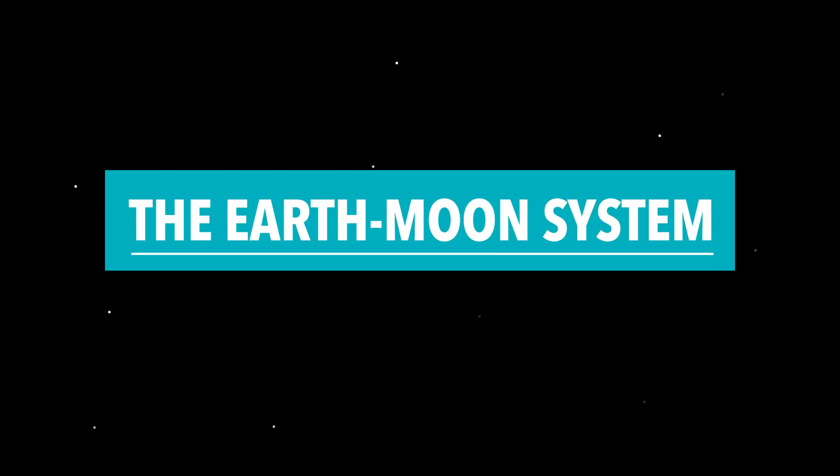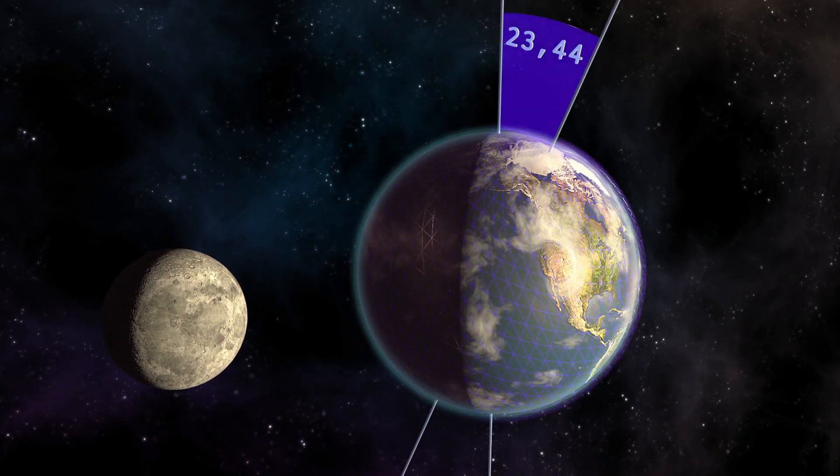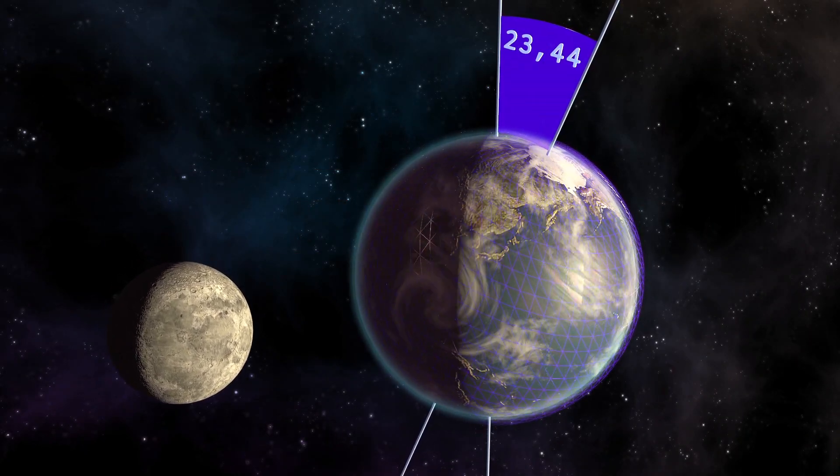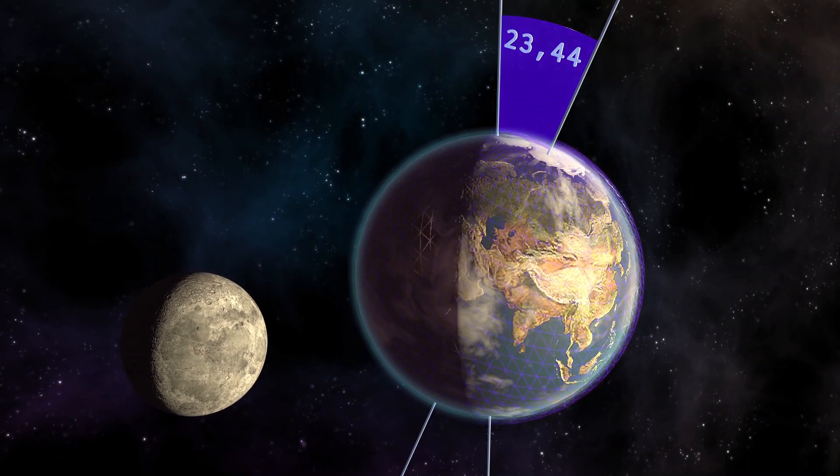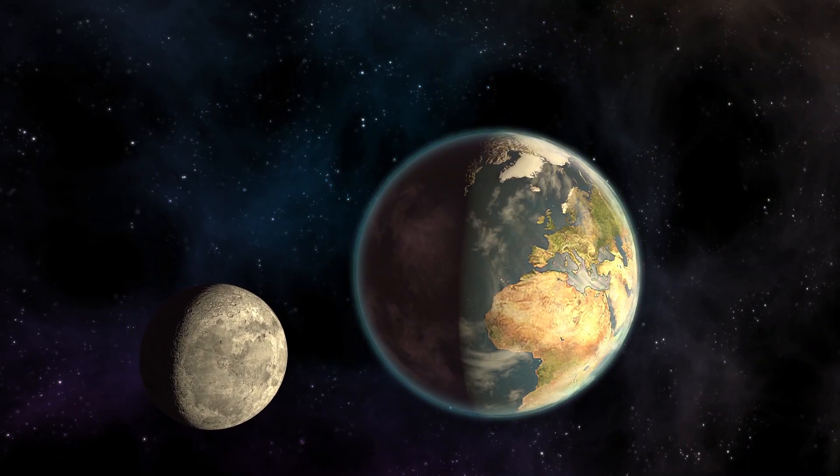The Earth-Moon system. Without the Moon, the tilt in the Earth's rotational axis wouldn't be stable. It would constantly be changing, making the weather totally unpredictable.